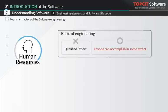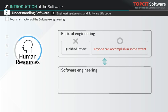Human resources is the last of the four elements of software engineering. The foundation of engineering lies in the fact that anyone — not just a professional — can accomplish the job with the same or better results. Since development, improvement, and maintenance in software engineering are dependent on people and organization, software engineering has relatively more people dependency than any other engineering.